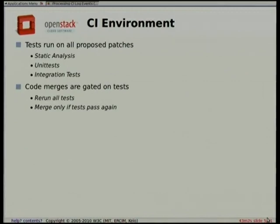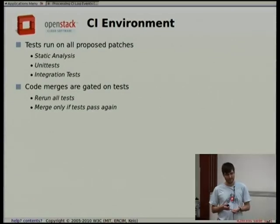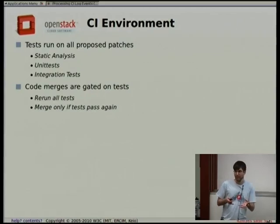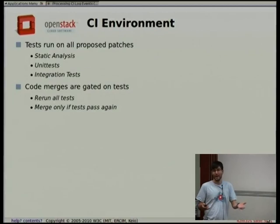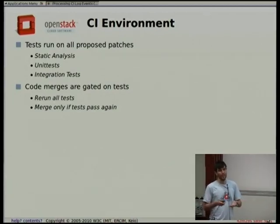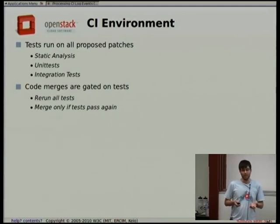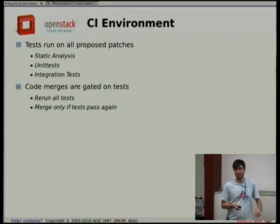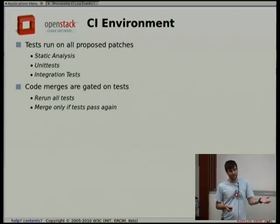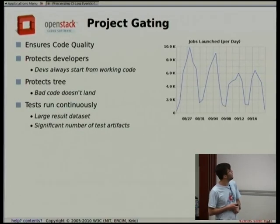In the CI environment, we run tests on all proposed patches. You write some code, push it up to our review system, and we immediately test it. We do that to provide feedback to code reviewers as well as the person submitting the code as quickly as possible. We do everything from static code analysis like PEP 8 and linting, to unit tests, to full integration tests where we deploy a complete cloud on a single node and run a test suite against it. We also gate code merges on these tests, which means if your code doesn't pass the tests, you don't merge. We call that project gating.